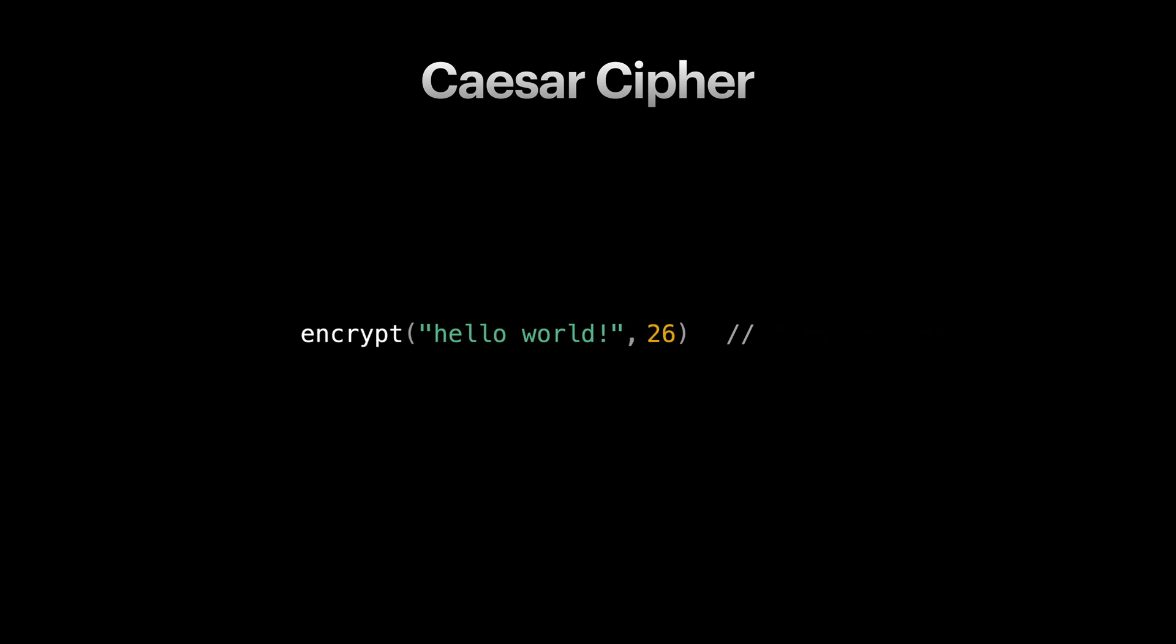If that's so, what happens if we rotate and shift hello world 26 times? Well, as you know, 26 is the number of alphabets in English language. Take a moment and think about it. You're right, the encrypt function for the key 26 will return hello world again.